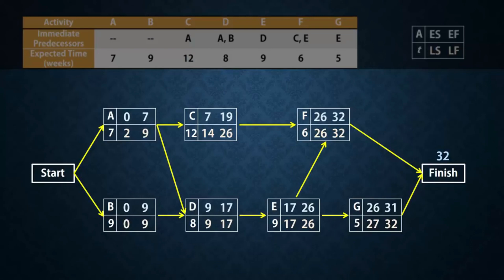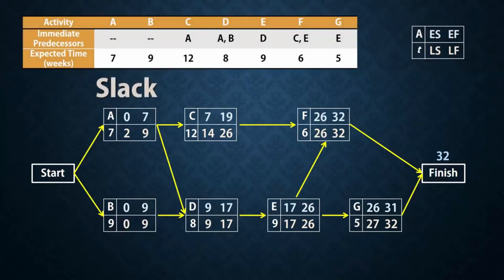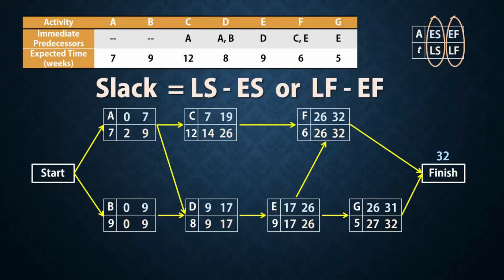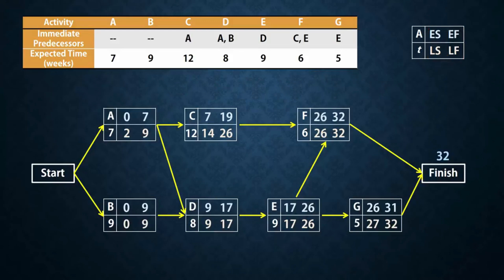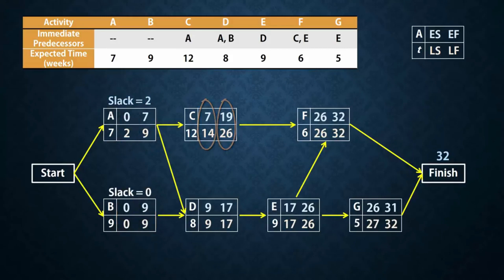Slack for an activity is defined as how long the activity can be delayed without extending or increasing the project's completion time. It is calculated as LS minus ES or LF minus EF. So the slack for A will be 2 minus 0, or 9 minus 7, which will be 2. The slack for B will then be 0. For C it will be 7. For D, 0. For E, 0. For F, 0. And for G, 1.